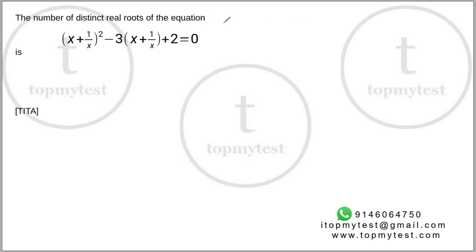The number of distinct real roots of the equation: (x + 1/x)² - 3(x + 1/x) + 2 = 0. If you look at this, the expression x + 1/x is common in both terms. So let's call this y.